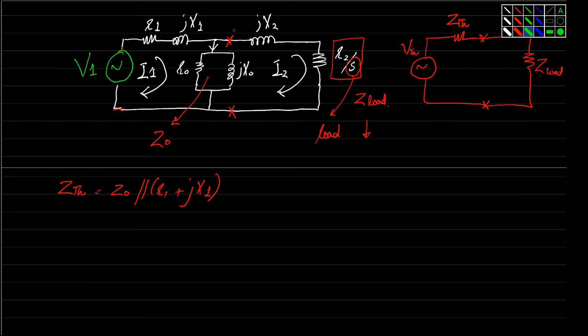So finding VTh between point A and B, we have VTh that will be equal to Z0 divided by Z0 plus R1 plus jX1, multiplied by this input voltage source.